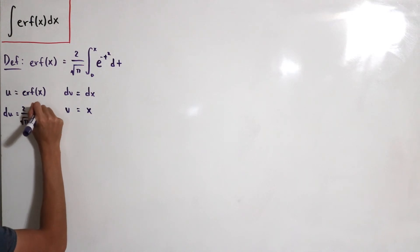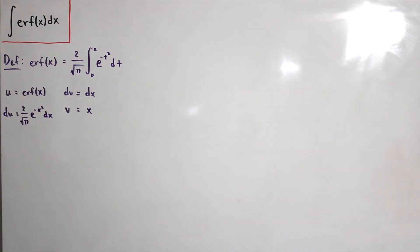And simply it's just 2 divided by the square root of π and then times e to the negative x squared dx. So now you can actually see that we can just plug the pieces together.